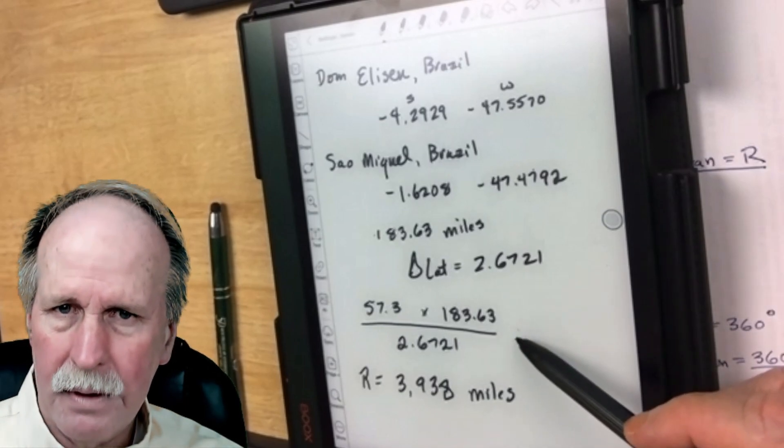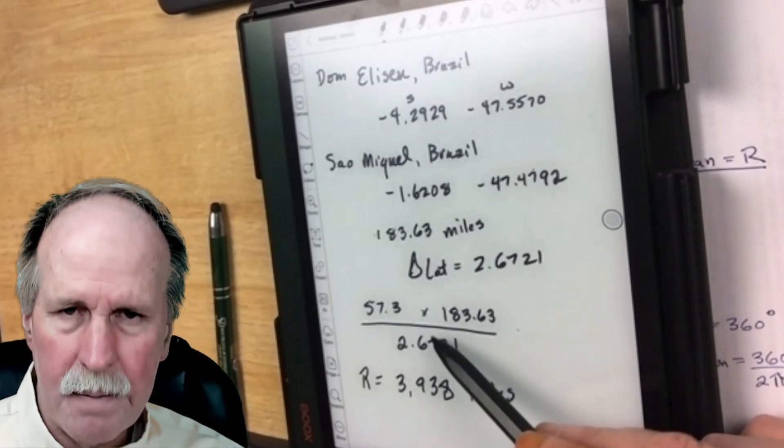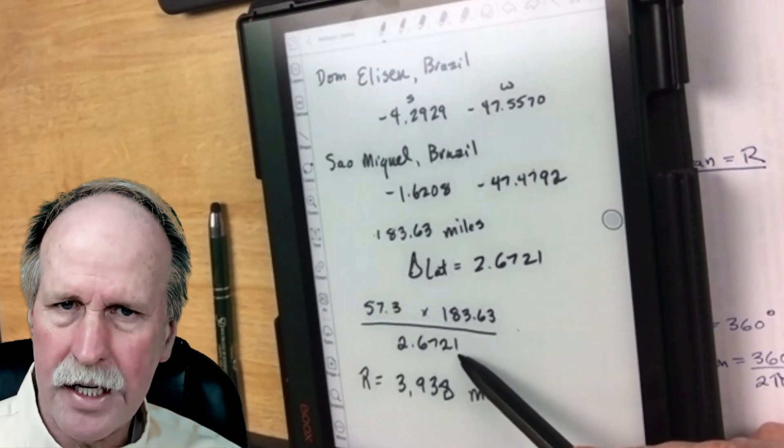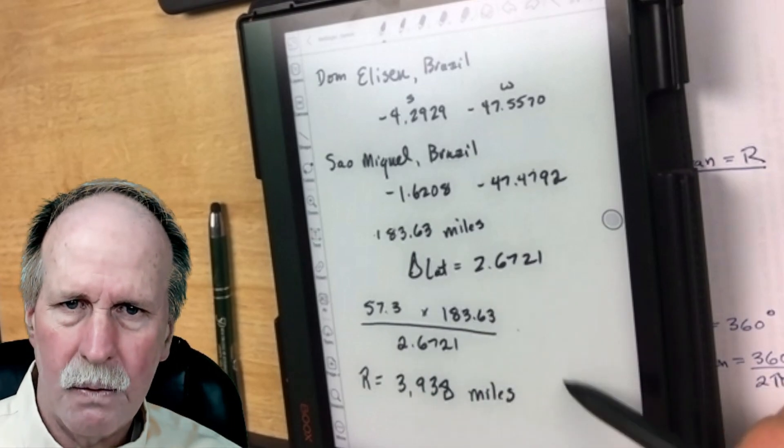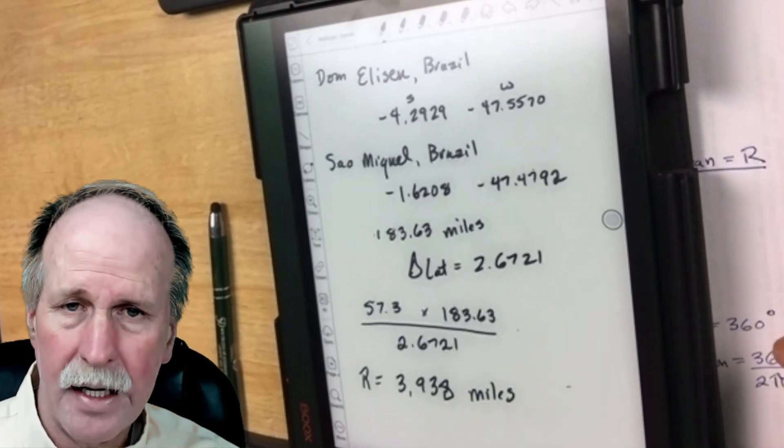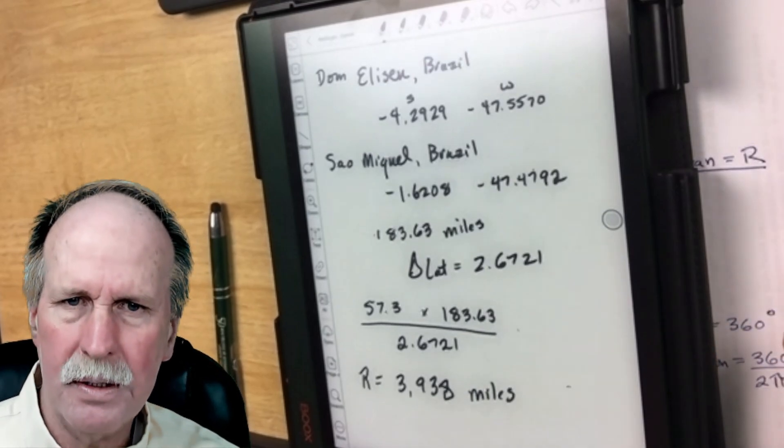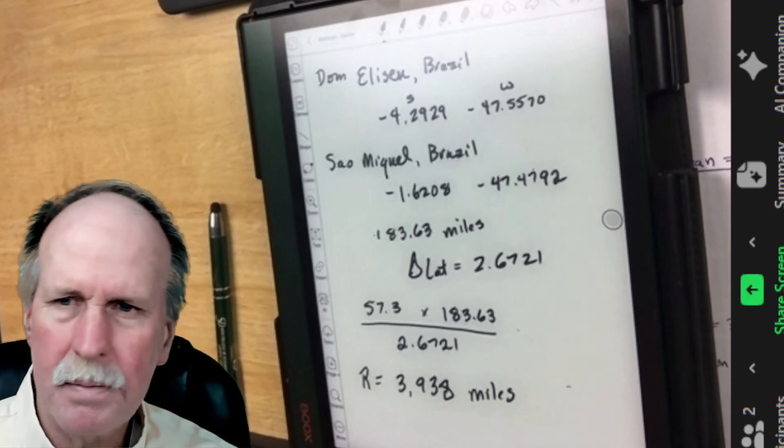Let's go ahead and do our math. Same math. We have one radian. The number of degrees changed times the distance. Radius comes out to 3938 miles. That actually surprised me. I thought it might be just a little bit more. Probably rounding errors. And that's that.